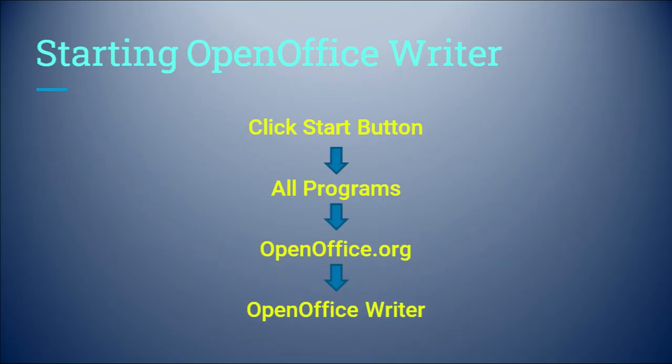Let's see how we start an OpenOffice program to initiate the process and to start writing text within that particular document. We can simply go to the Start button of the computer system, then click on All Programs, then find OpenOffice.org — wherein all the packages available within OpenOffice are listed — and then click on OpenOffice Writer. This way we can simply open the software.